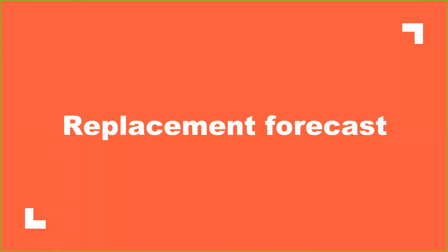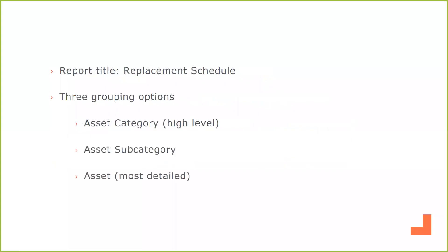Last up, getting into our replacement forecast report. The report title in the system is actually called replacement schedule. When I show you this report, you're going to see there are going to be three grouping options. You're going to have the option to run this report based on asset category, which is going to give you high-level information. You can also group it by asset subcategory, which is an intermediate level where you start to get into a little bit more detail. The first two grouping options are going to be good more so for budgeting purposes, whereas when you are grouping this report by asset — the most detailed information — that is what's really going to help you as a maintenance team know the exact assets you need to replace in a given year.